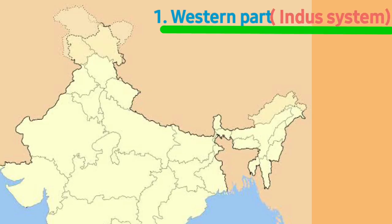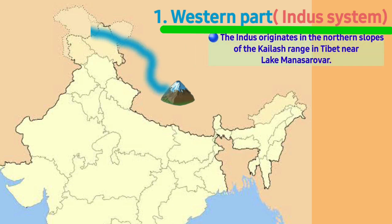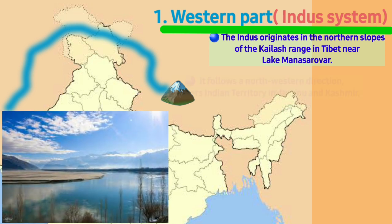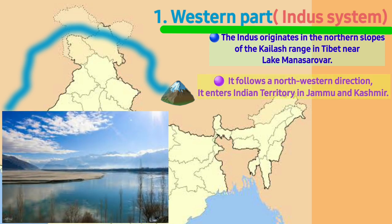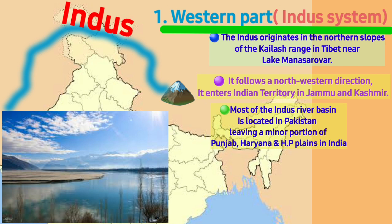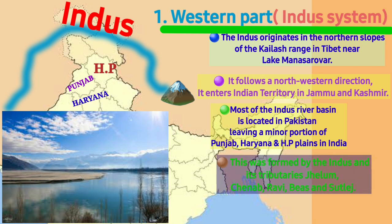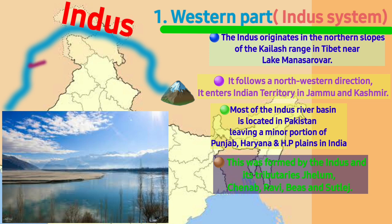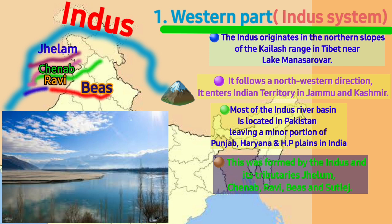The Western part of the Indo-Gangetic Plains mainly has the river course of the Indus. The River Indus takes birth from Kailash Range in Tibet at Lake Mansarovar. Indus flows towards the northwest and enters India in Jammu and Kashmir, after which it enters Pakistan. It leaves a larger portion in Pakistan and a minor portion in India, covering Punjab, Himachal Pradesh, and Haryana. This Western Indo-Gangetic Plain was formed due to the River Indus and its tributaries: Jhelum, Chenab, Ravi, Beas, and Sutlej.